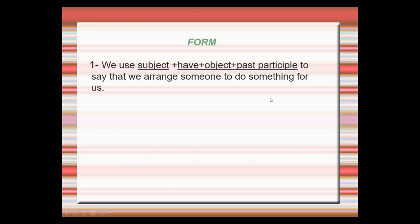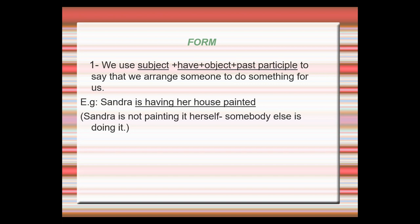Let's look at the form and the use of this structure. We use have something done to say that we arranged someone to do something for us. To do this, we must have a subject, the verb have, an object, and a verb in the past participle form. Look at this example: Sandra is having her house painted. Sandra is the subject, is having is the verb have in the present continuous form, her house is the object, and painted is the verb in the past participle form. It means that she is not painting it herself — somebody else is doing it.